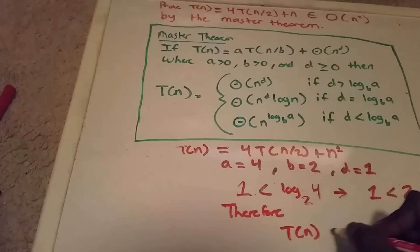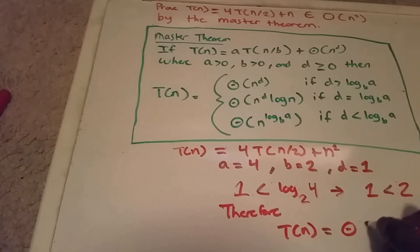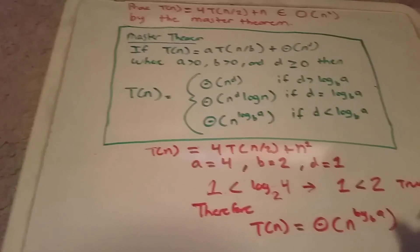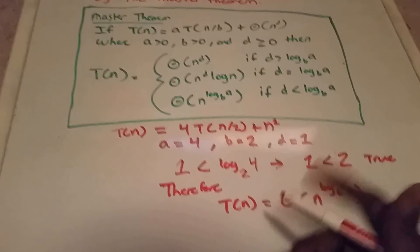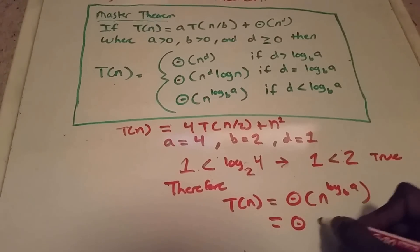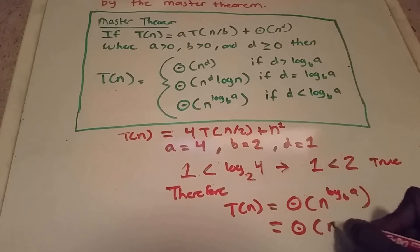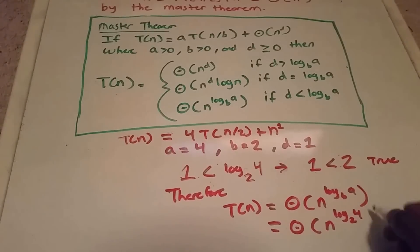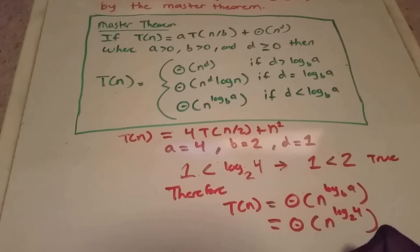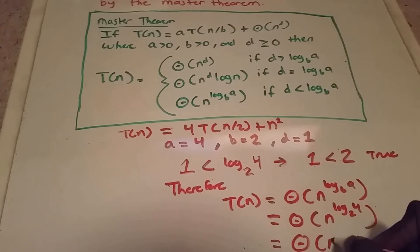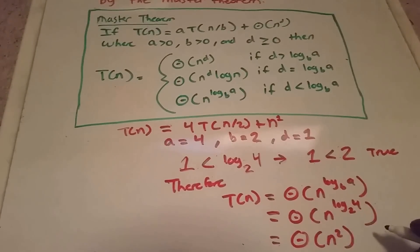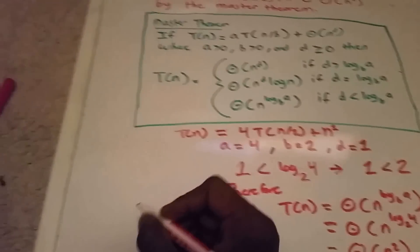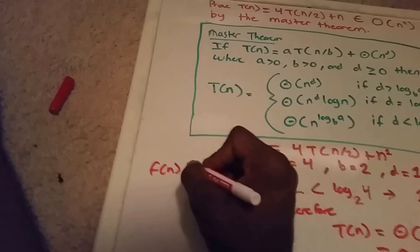T(n) belongs to theta of n to the log base b of a, which means it's theta of n to the log base 2 of 4, which means it's theta of n squared.